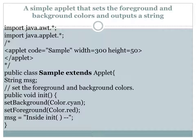Next, we have to embed the applet code — that is, add the applet tag as a comment inside the source file. Inside the applet tag we specify the name of the class file; here the class name is Sample. We also specify the width and height in pixels. The class must extend the superclass Applet, and within the init method we specify the background color and foreground color.